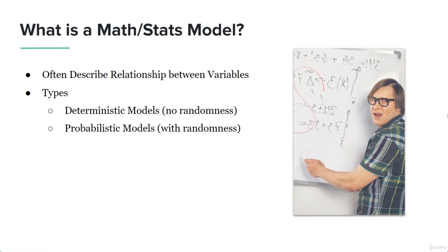Deterministic models are the ones in which there is no randomness and no probability involved, which means that the answers are deterministic and no external factors depend on them. The probabilistic models are the ones which involve probability and hence involve randomness as well.